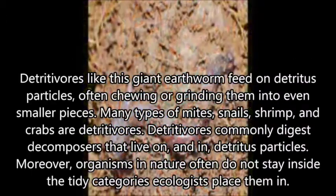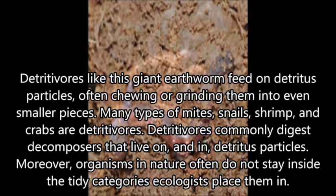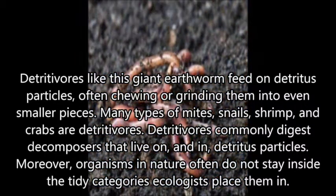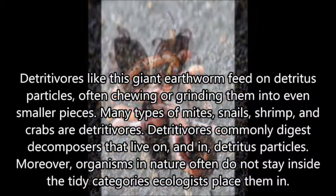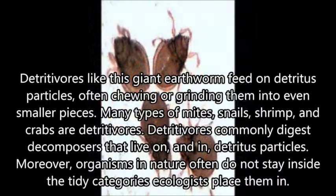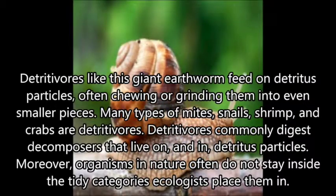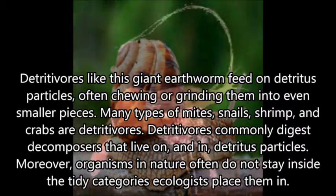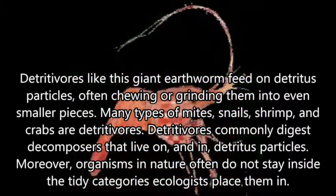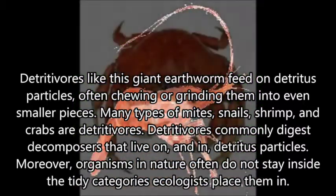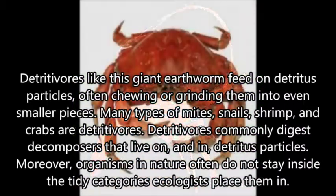Detritivores, like giant earthworms, feed on small particles of organic matter, after chewing or grinding them into even smaller pieces. Mites, snails, shrimp, and crabs are detritivores. Detritivores commonly digest decomposers that live on and in detritus particles.